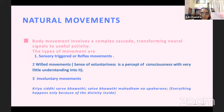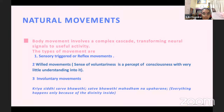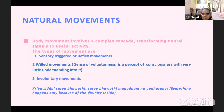Sensory triggered movements are reflex movements based on information from the sense organs. Willed movements are voluntary — you fix a goal and carry out a movement, which has a different motor plan. We also have involuntary movements like the beating of the heart, breathing, and movement of the intestines. There can also be abnormal involuntary movements. So we have three types: sensory triggered movements, willed movements, and involuntary movements.